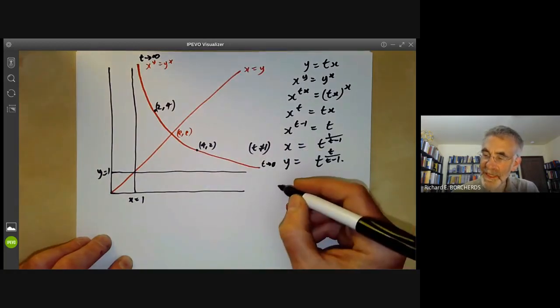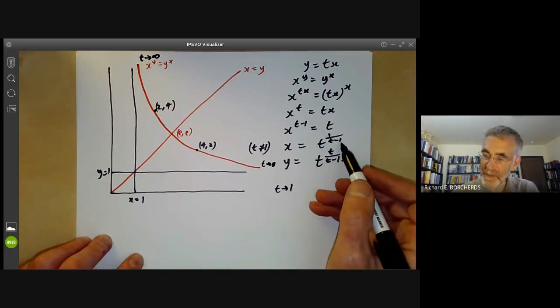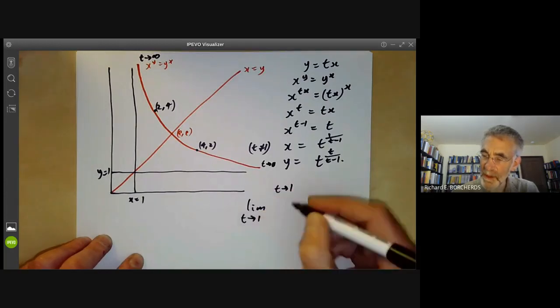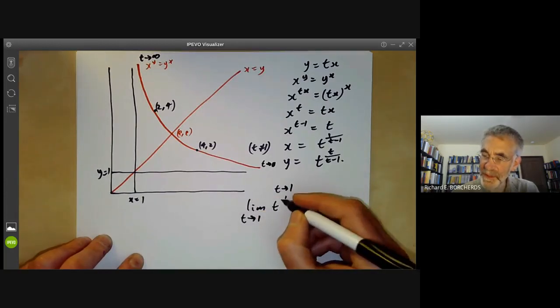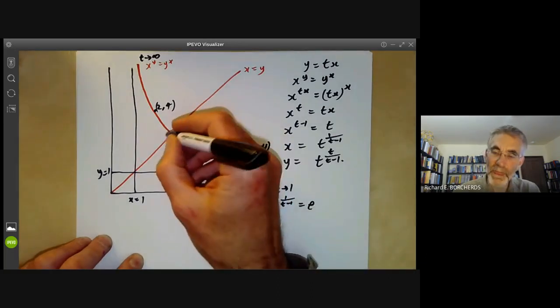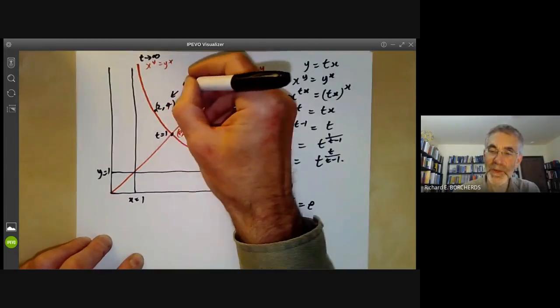As t tends to 1, the limit of t to the 1 over t minus 1 is e. So at t equals 1, we get this point here.